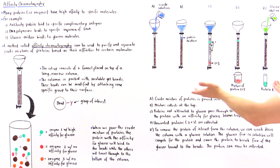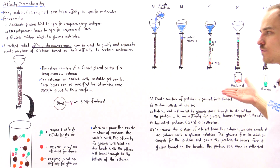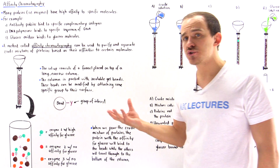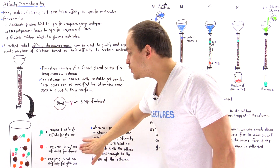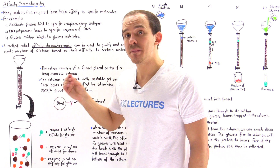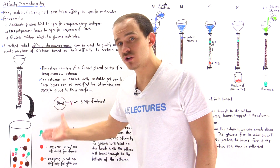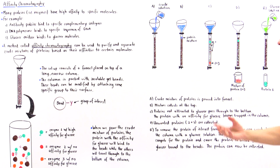Following affinity chromatography, we have a solution that is purely protein one — the protein we wanted to isolate. This method is only useful if we know what specific molecule that protein binds to, and if we also know that the other proteins in the mixture don't bind to that same molecule. If all proteins had high affinity for glucose, all would have been trapped in the column, and we would have had no way to isolate protein one using this technique.